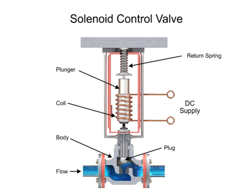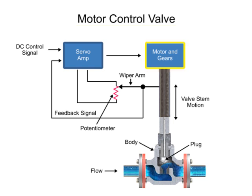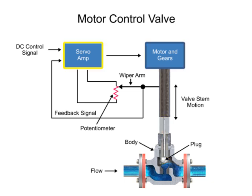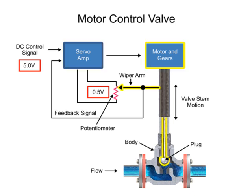Another method for variable valve positioning uses a motor and is referred to as proportional control mode. Using a gear motor attached to the valve stem, a servo amplifier provides a DC control signal that moves the valve to the desired position. Feedback is achieved with a wiper arm attached to the valve stem that sends a signal back to the servo amplifier where the position is monitored. The servo amplifier drives the motor until the control signal is equal to the feedback signal.